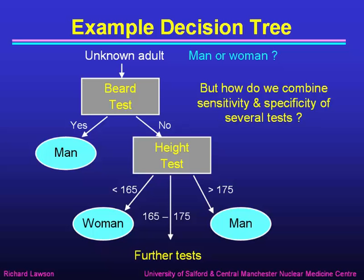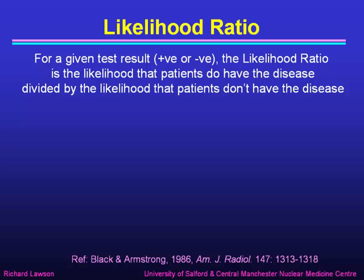The problem is we know the sensitivity and specificity of each of these tests, but how do we combine those together to get a result from more than one test? Well, we can make life easier if we use something called the likelihood ratio. The likelihood ratio is defined for a given test result. Either a positive result or a negative result gives different likelihood ratios. The likelihood ratio is the likelihood that patients do have the disease divided by the likelihood that patients don't have the disease. Let's just look at it step by step.